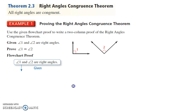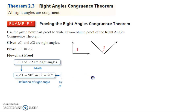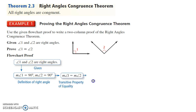I'm going to make a little flowchart with little bubbles. In the first bubble, I'll write what we're given, and then a little arrow to my next statement. The next statement is that measure of angle one is 90 degrees and measure of angle two is 90 degrees.